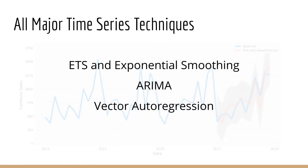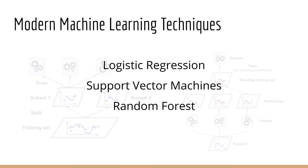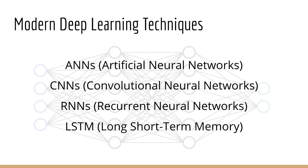This course will cover all the major time series techniques such as ETS and exponential smoothing, ARIMA, and vector autoregression. We'll also look at modern machine learning-based techniques such as logistic regression, support vector machines, and random forest. We'll even look at modern deep learning techniques including ANNs, CNNs, and RNNs — and yes, this includes everyone's favorite: the LSTM.